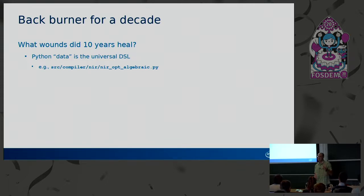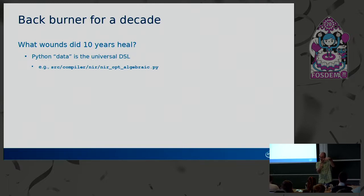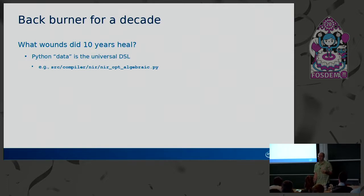There are a couple of things NIR-OPT algebraic doesn't support that might be nice in a generator generator. It doesn't support regular expressions or more complex pattern matching — you just do a static match of an exact pattern. And in the 'do that' part, it's very limited in what you can put there. It's also a bit lacking on being able to put constraints on sources. For example, you can't say 'match this pattern if this constant is less than the other constant' — and there are a bunch of cases where that would be handy.